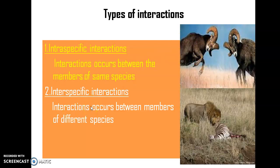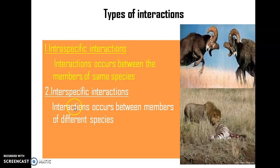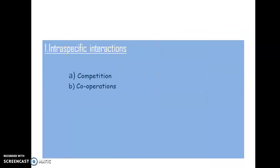In the case of interspecific interaction, this interaction involves the interaction between two different species. Here you can see a lion and a zebra interacting with each other. The involvement of two different species generally constitutes interspecific interaction. Interspecific interaction generally takes place at a community level, while intraspecific interaction generally takes place within a single population.